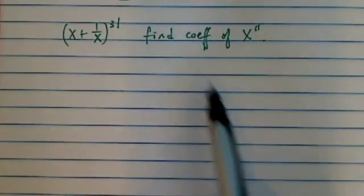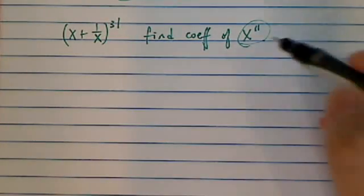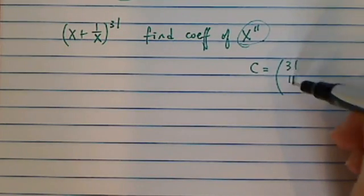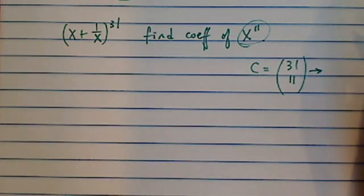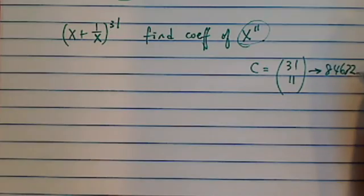This one is actually a tricky problem. If you took this term as an x to the 11th term, then you have the coefficient is going to equal to 31 choose 11. This one turned out to be a big number, something like 84,672,315.